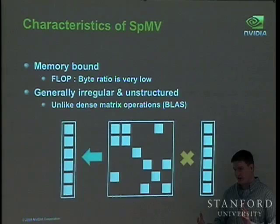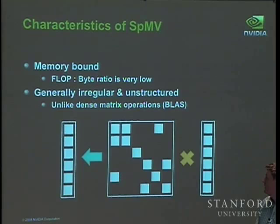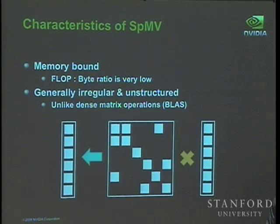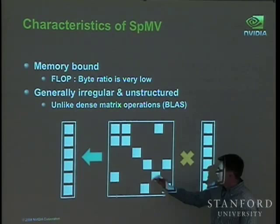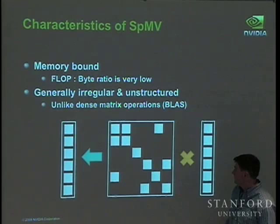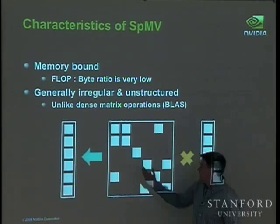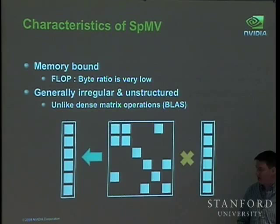SpMV is memory-bound: we access one matrix value and one vector element, perform two floating-point operations, and repeat. Very little computation occurs per byte read from memory. You could implement SpMV using generic primitives like segmented scan, but performance suffers because it isn't specialized. We invest extra effort to make it as fast as possible. A dense BLAS matrix-vector routine establishes an upper bound on achievable performance.